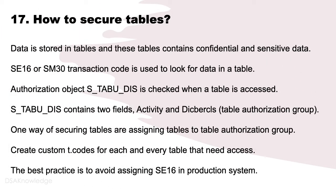How do you secure tables? Data is stored in tables and these tables contain confidential and sensitive data. SE16 or SM30 transaction codes are used to look at data in a table. Authorization object S_TABU_DIS is checked when a table is accessed. S_TABU_DIS contains two fields: Activity and DICBERCLS (table authorization group). One way of securing tables is assigning tables to a table authorization group. Create custom T-codes for each table that needs access. The best practice is to avoid assigning SE16 in the production system.